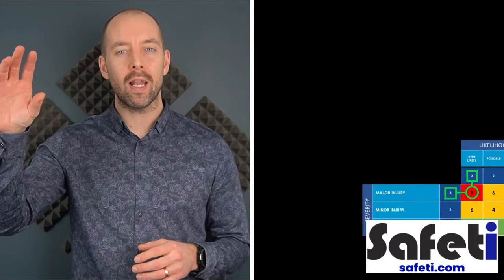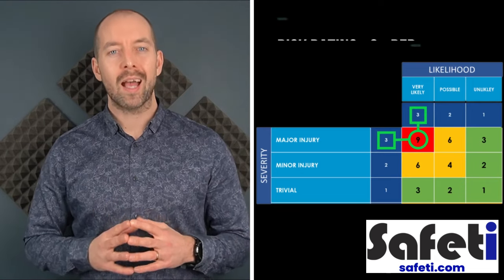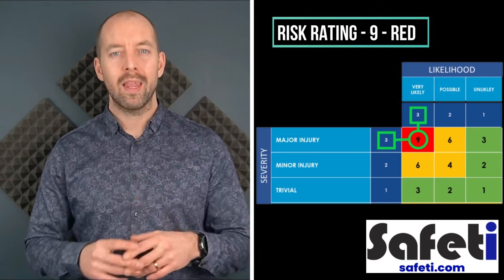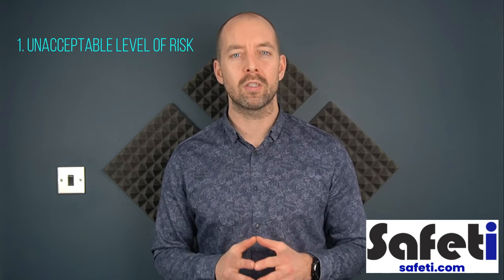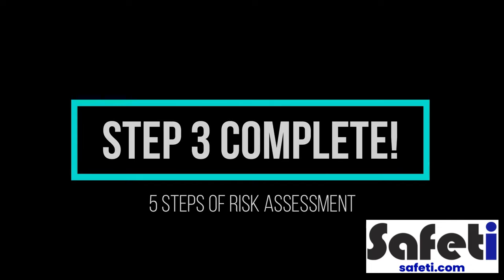So if severity is level three — the highest — and likelihood is very likely, also number three, where does that land on the risk matrix? When we match a severity rating of three against a likelihood level of three and multiply the two together, that gives us a figure of nine — the highest figure you can get on this matrix. In this scenario, as part of our risk assessment, we would really be asking that more control measures be put in place, because the likelihood of something bad happening is very high, and that should be unacceptable within most businesses.